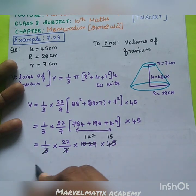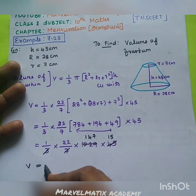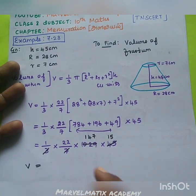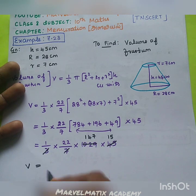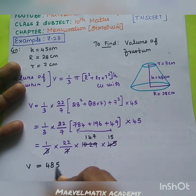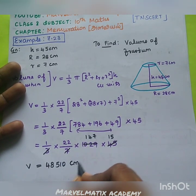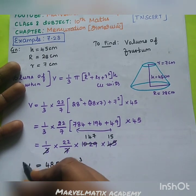So if we multiply all the numerator, the answer is 48,510 cubic units — so it's centimeter cube. This is the simple volume.